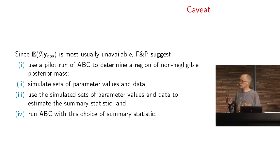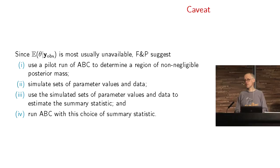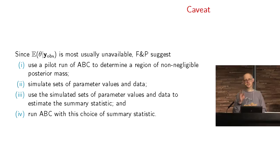In practice, because E(theta | Y) is not available, the semi-automatic ABC runs a pilot-run ABC based on a certain collection of summary statistics, then produces a first approximation to the expectation of theta given Y and uses this approximation as a new summary statistic to run a second ABC. This produces much improvement in the quality of the ABC distribution.